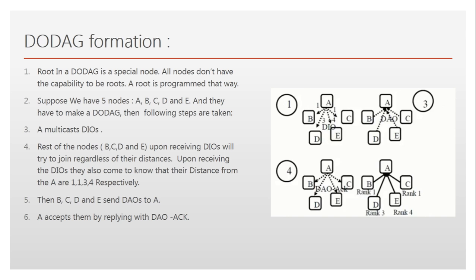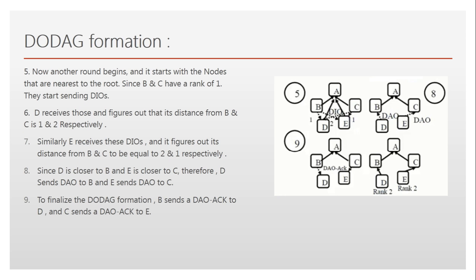In Round 2, we already know from Round 1 that B and C are nearest to A. Now B and C both multicast DIOs to D and E. D receives DIOs from both B and C, and E also receives DIOs from both B and C. D realizes its distance from B is 1 and from C is 2. Similarly, E realizes its distance from B is 2 and from C is 1. You can see the distances on the right side of the screen.